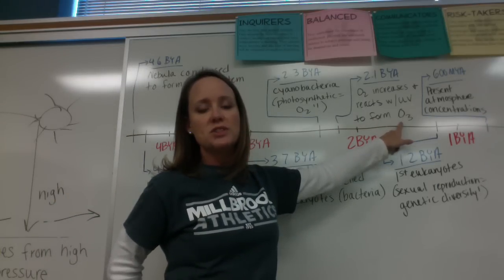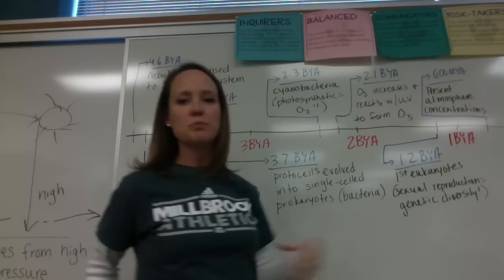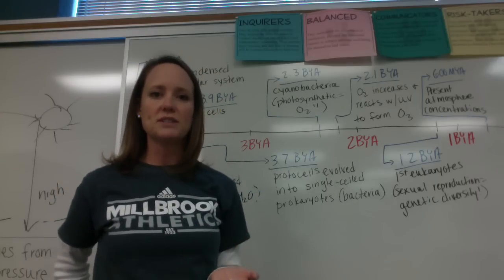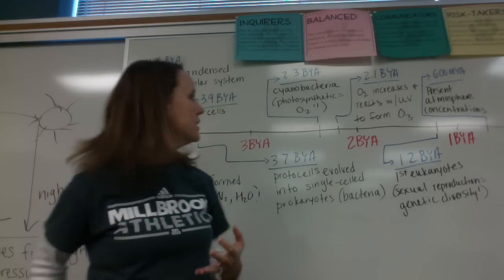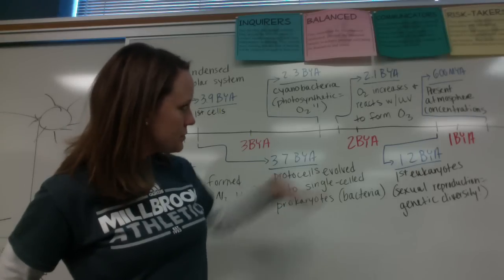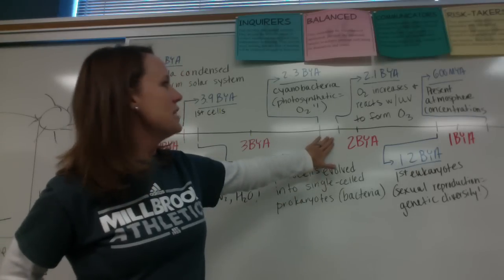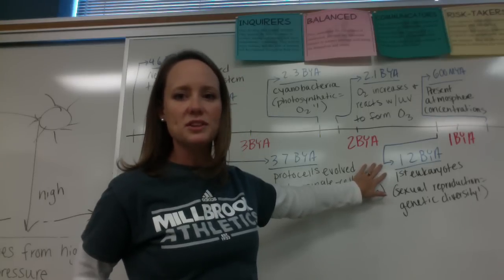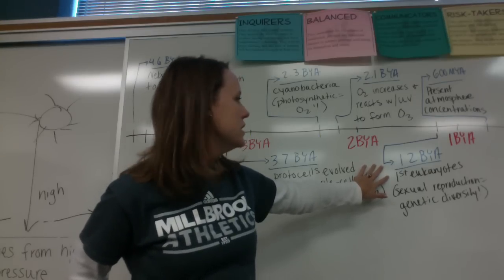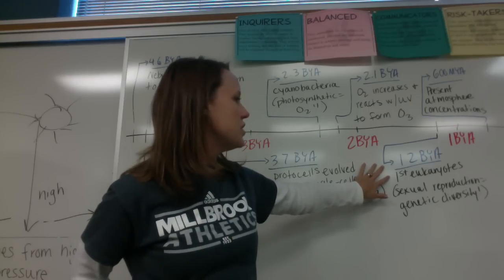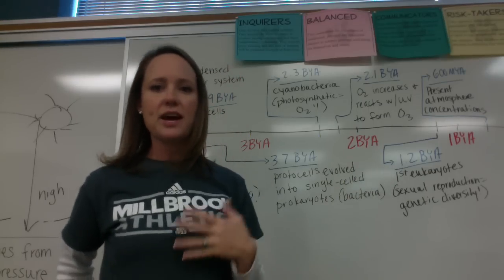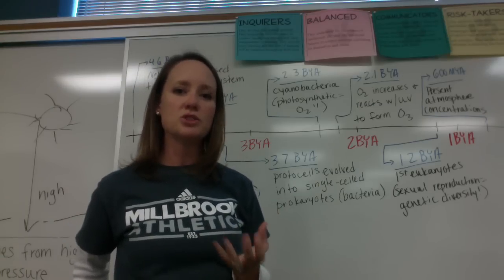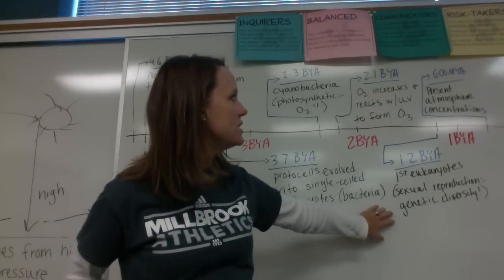About 2.1 billion years ago the oxygen levels were high enough that they started to react with ultraviolet radiation to form O3, which is ozone. When we started seeing ozone in the atmosphere, temperatures started to drop because the ozone was absorbing some of the ultraviolet radiation. After that, life was able to evolve even more — we started seeing our first eukaryotes, which are multicellular and had sexual reproduction, so their offspring were genetically diverse.